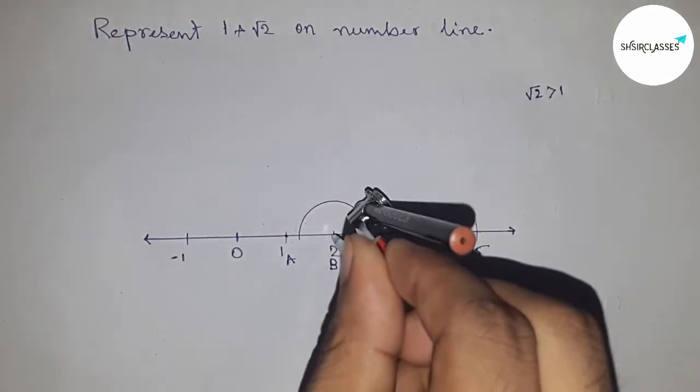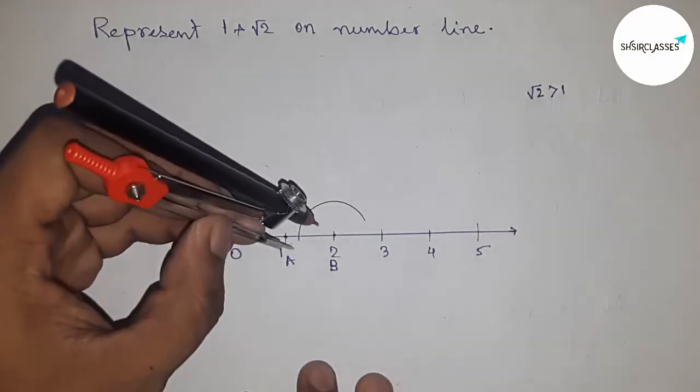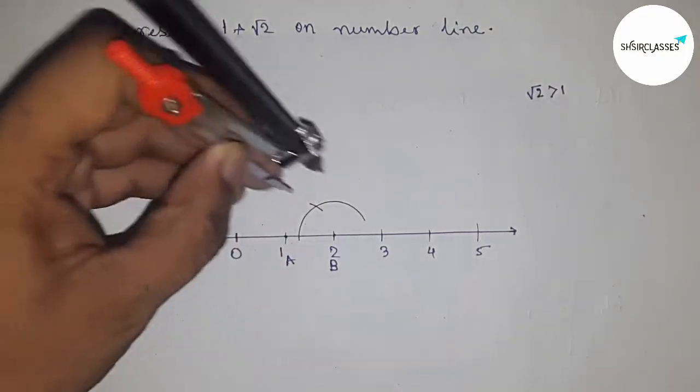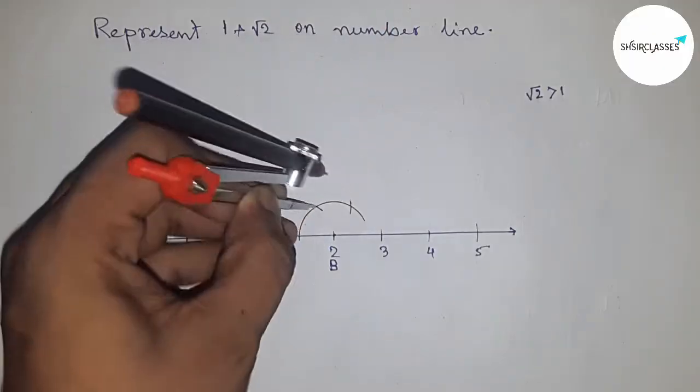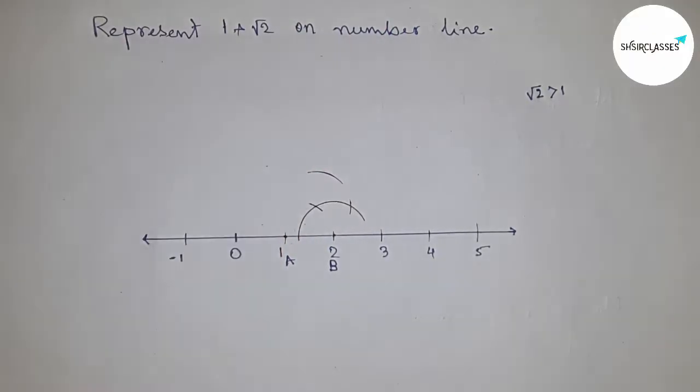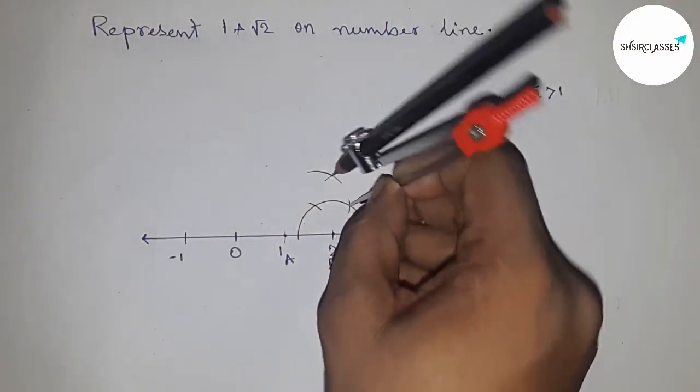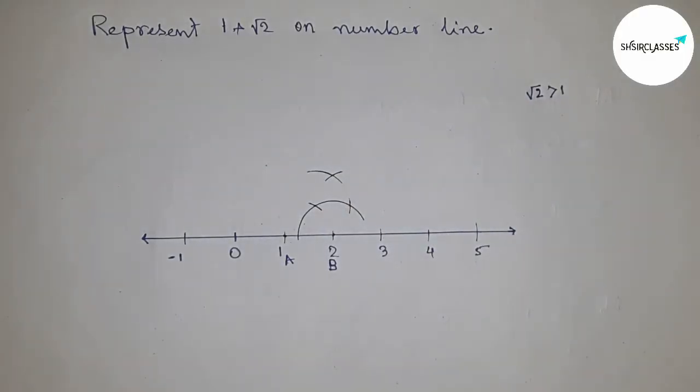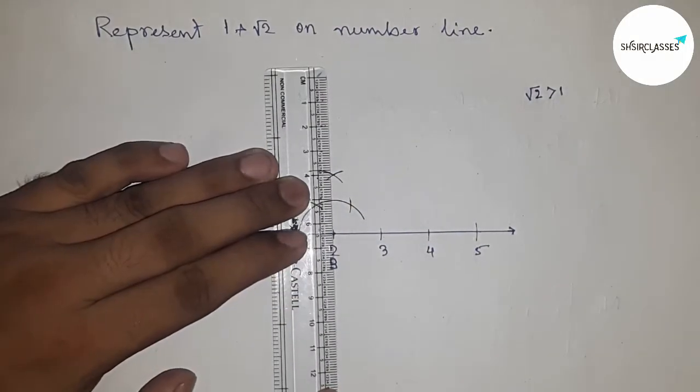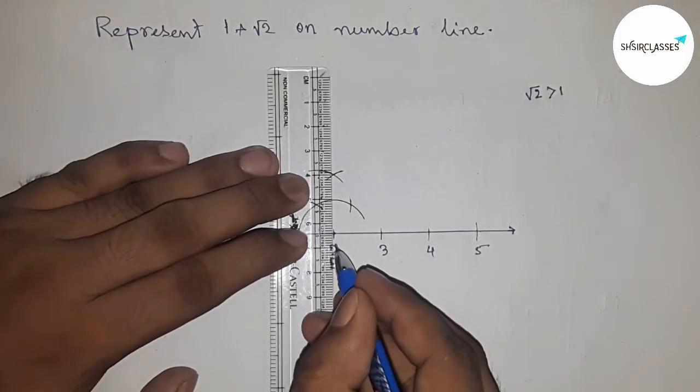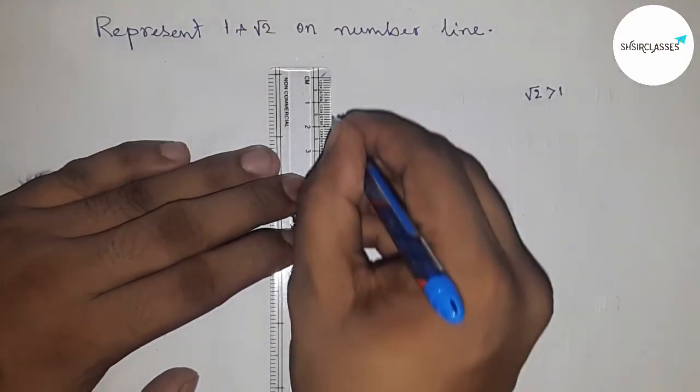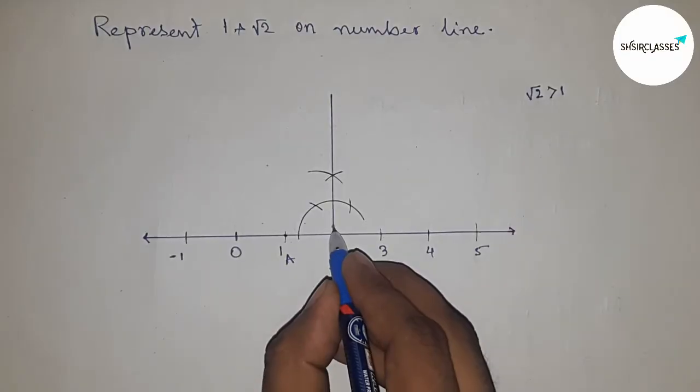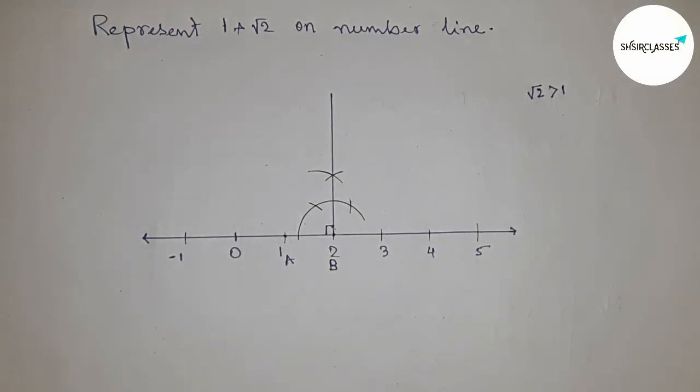If you don't know how to construct √2, first watch my video which I give in my channel. So constructing 90 degrees at point B, we got 90 degrees at the point.